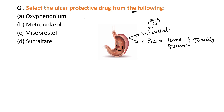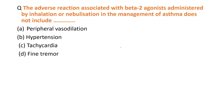The mechanism of ulcer protective drugs is that they make a protective covering around the ulcer. So the answer to this question is sucralfate. Now we see another MCQ: the adverse reaction associated with beta-2 agonist administration by inhalation or nebulization in the management of asthma does not include which of the following?